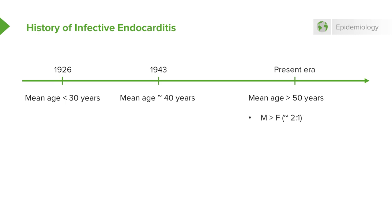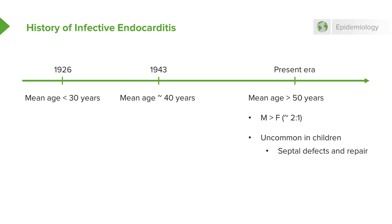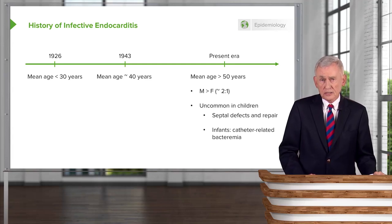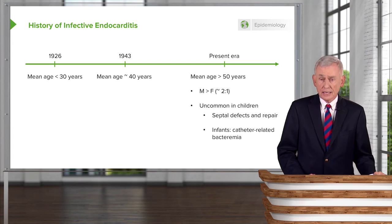Males outnumber females 2 to 1. It's an infection that's uncommon in children unless they have some septal defect repaired related to congenital heart disease. Now infants can get infective endocarditis because small babies are kept alive today where in the past they weren't, and they have lots of catheters for venous and arterial access, so they can get endocarditis.